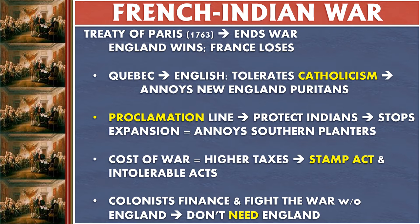So previously England only controlled the 13 colonies and Jamaica, and now they won a larger share of colonies in the New World. But this had a few impacts on the 13 colonies and made several different groups within the colonies fairly angry at the English. The first issue was Quebec — Quebec was a French Catholic area of Canada, and England had decided to tolerate Catholicism.